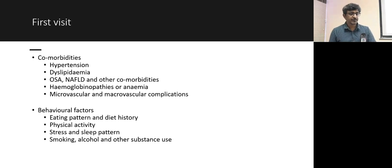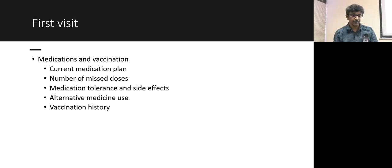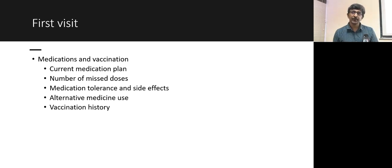Look for comorbidities such as hypertension, dyslipidemia, NAFLD, OSA, hemoglobinopathies, or anemia — these affect whether you use HbA1c or alternative monitoring. Screen for microvascular and macrovascular complications. Assess behavioral patterns: diet, physical activity, stress, sleep, smoking, and alcohol. Review current medications — check compliance, tolerability, side effects, and whether they are taking any alternative medicines.